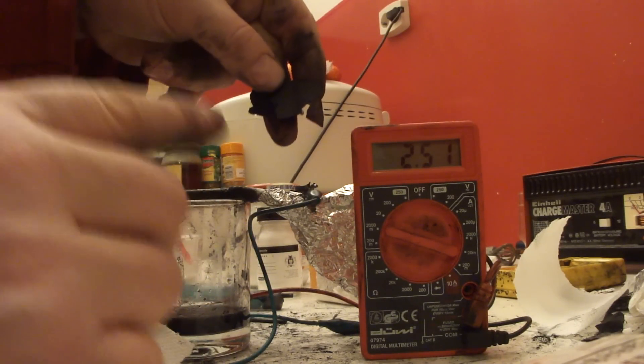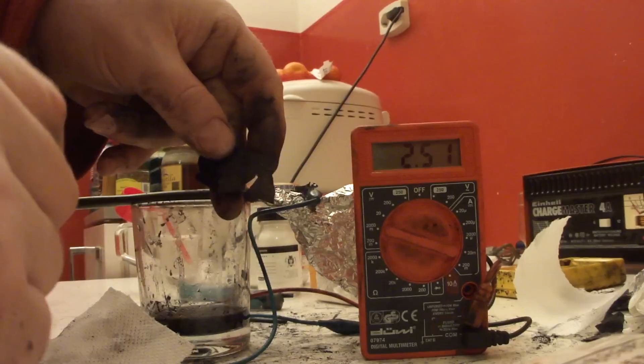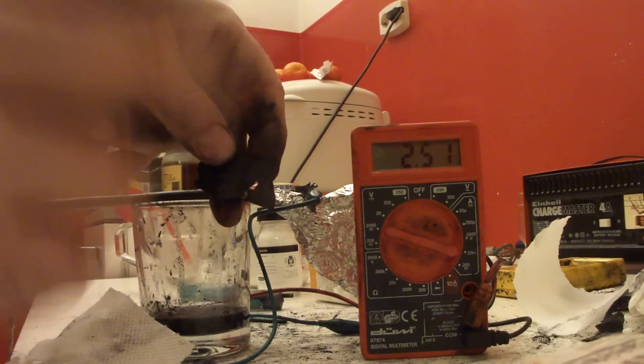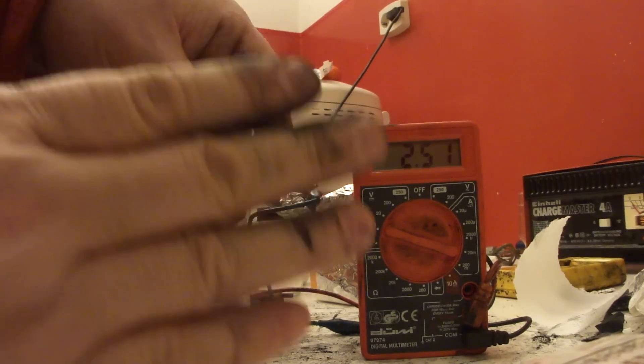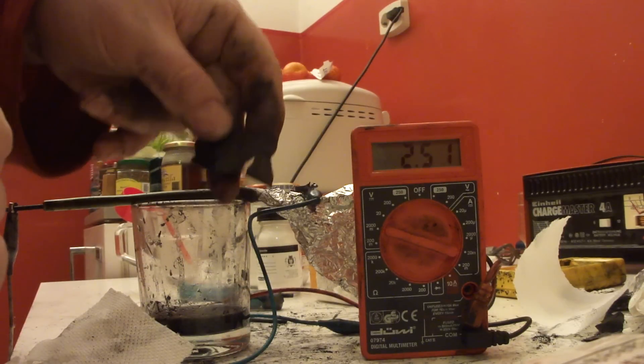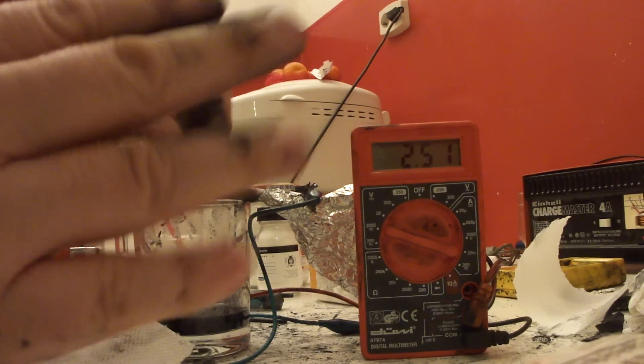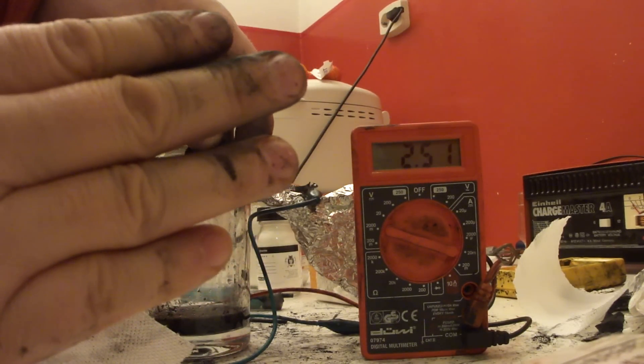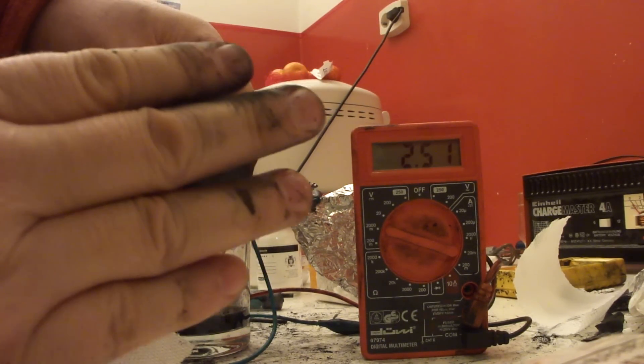So you can then pull out the aluminum foil when it's used up and just put in again new aluminum foil, and then you have a new cell. And maybe refresh a little bit the water potassium carbonate electrolyte. Thank you.